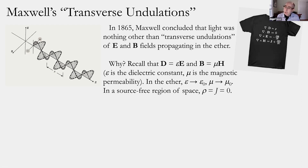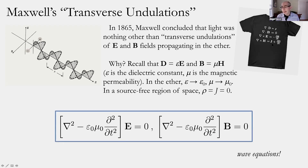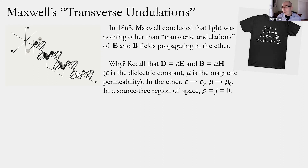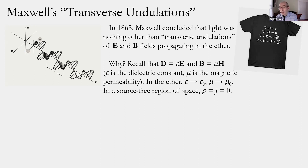Maxwell realized that looking at the source terms on the right-hand side, there are terms referring to either electric charge density rho or electric current J. Maxwell began applying his equations to a region of space filled only with ether — what we would call empty space. He wanted to consider a region where there was no clump of electrically charged matter, so rho would vanish, and there was no electric current flowing, so J would vanish.